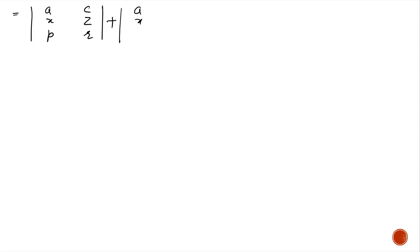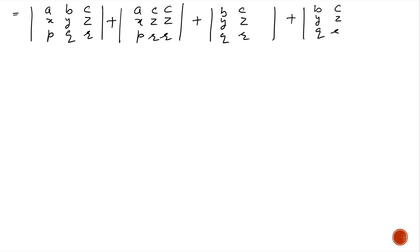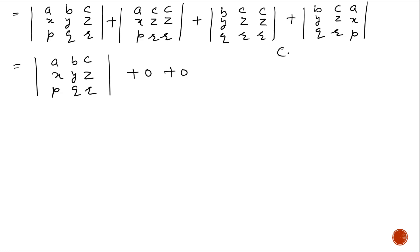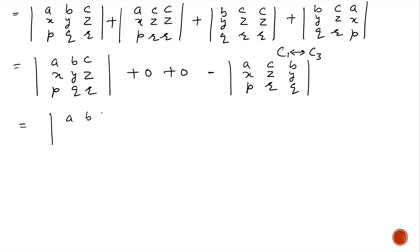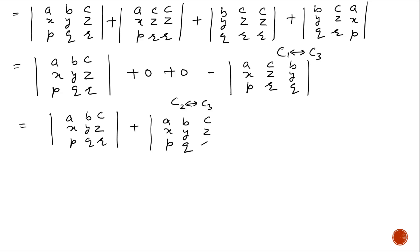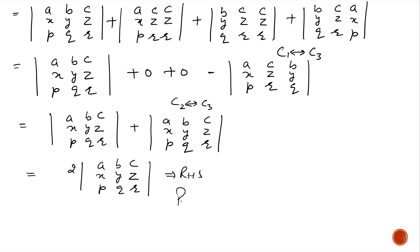Now breaking the second column in the remaining determinant, we get c, z, r and a, x, p. The second and third determinants equal 0. In the fourth determinant, replace c1 by c3, taking a minus sign for the interchange. Then interchange c2 and c3, which makes the sign positive. After these column operations, the answer is twice the determinant of a, b, c; x, y, z; p, q, r, which equals the right hand side. Hence proved.